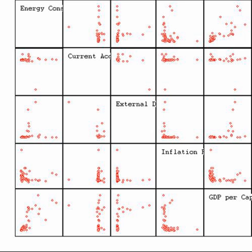Such distinctions can often be loosely correlated with data type in computer science, in that dichotomous categorical variables may be represented with the Boolean data type, polydomous categorical variables with arbitrarily assigned integers in the integral data type, and continuous variables with the real data type involving floating-point computation. But the mapping of computer science data types to statistical data types depends on which categorization of the latter is being implemented.